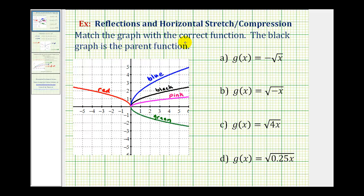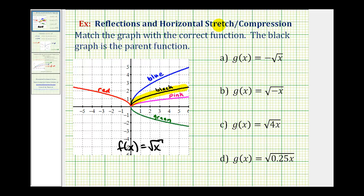In this question, we're asked to match the graph on the left with the correct function on the right. We're told the black graph is the parent function, which we should recognize as a square root function. So our parent function is f of x equals the square root of x. This question is a review of reflections across the x and y axis, as well as horizontal stretches and compressions.